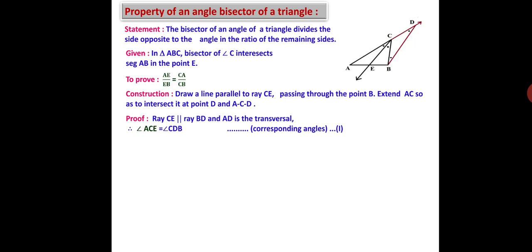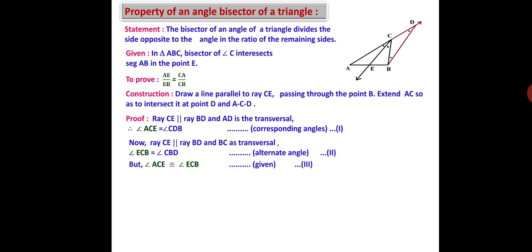Ray CE is parallel to ray BD and AD is the transversal. Therefore, angle ACE = angle CDB by the corresponding angle property — statement 1. Also, ray CE is parallel to ray BD and BC is the transversal. Therefore, angle ECB = angle CBD by alternate angles property — statement 2.